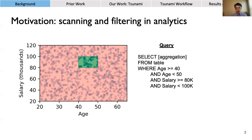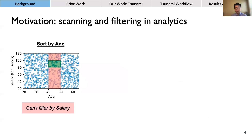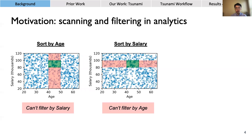One common way to reduce scanning is to sort the data by a certain dimension. For example, if we sort all the points by age, we can avoid scanning any point whose age is not between 40 and 50. But the downside is that this doesn't help us filter over the salary dimension, so we still end up scanning a lot of extra data, shaded in red. And if we instead sort by salary, we end up with essentially the same problem.